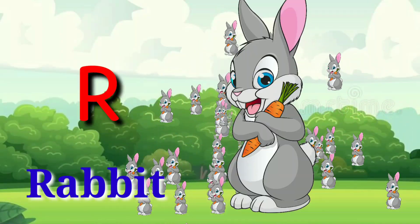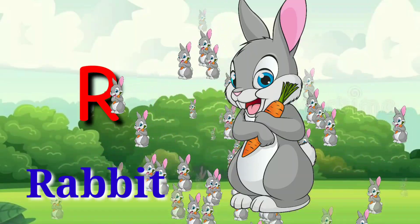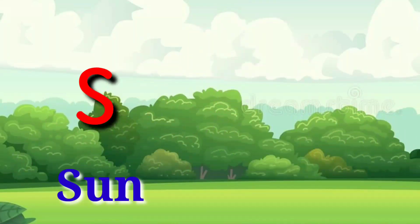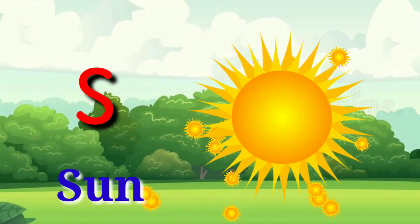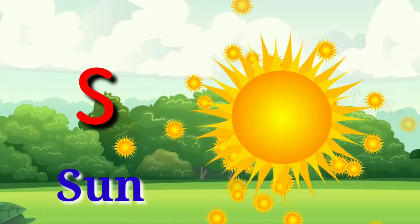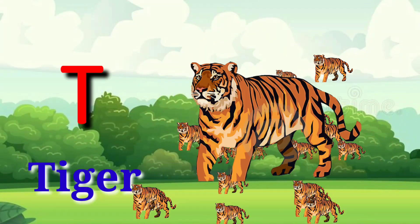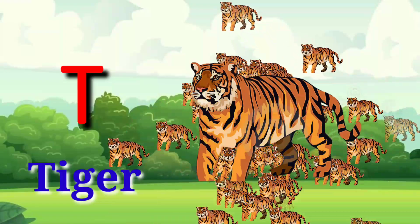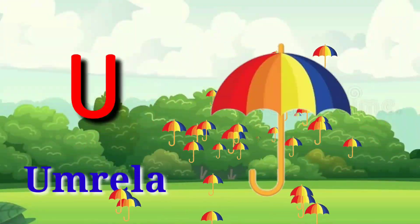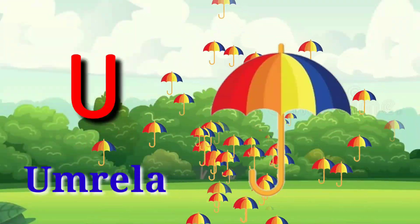Q for queen, R for rabbit, S for sun, T for tiger, U for umbrella.